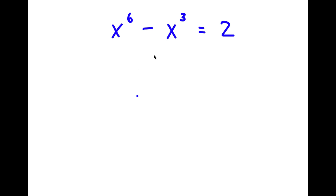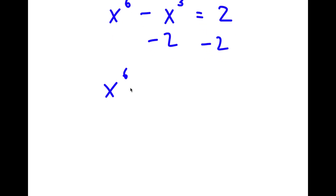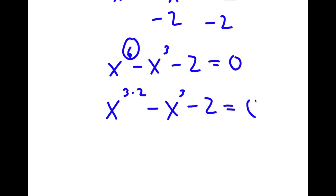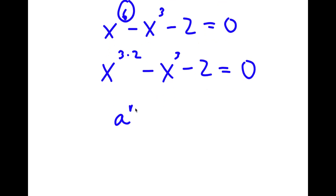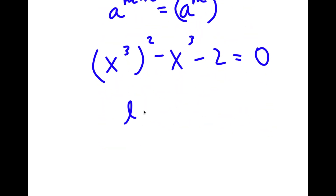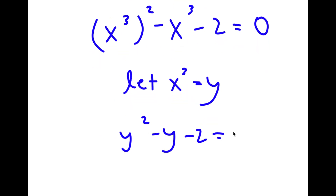In this problem, I have x to the power of 6 minus x to the power of 3 is equal to 2. Subtracting 2 from both sides gives x to the power of 6 minus x to the power of 3 minus 2 equals 0. Rewriting x to the power of 6 as x cubed all to the power of 2, and letting y equal x to the power of 3, I get y squared minus y minus 2 equals 0.